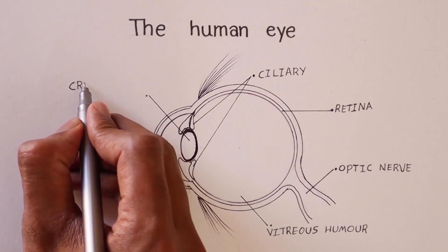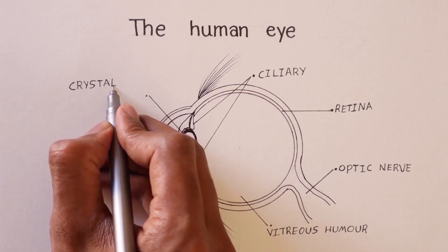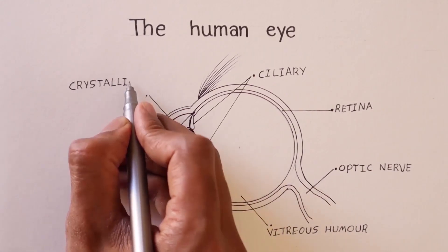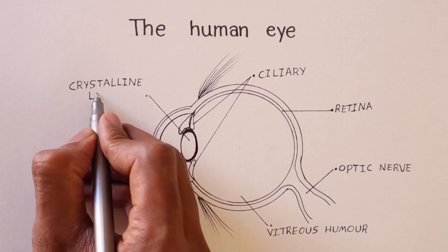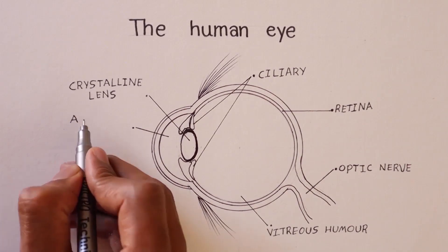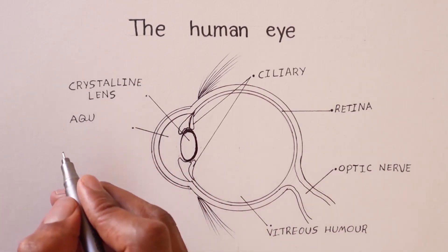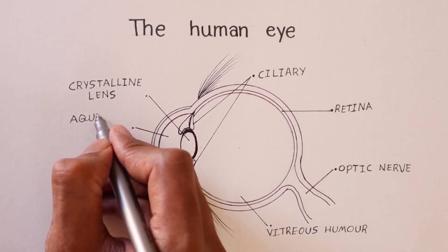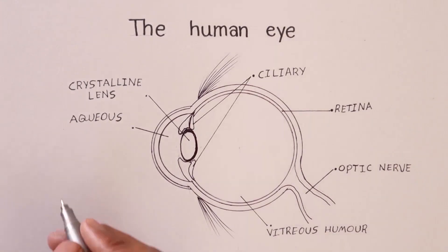Then this part is called as crystalline lens which is located in the middle of the eye. It helps to see the object. And this part is called as aqueous humor which contains water.